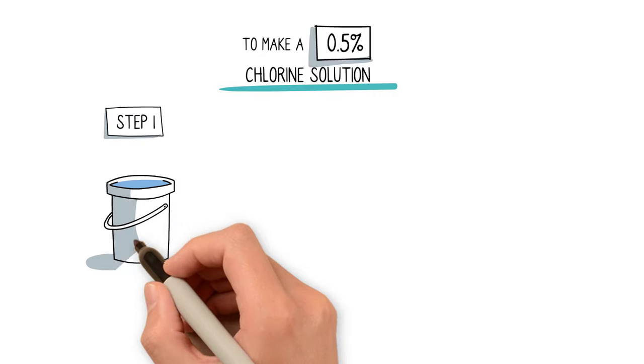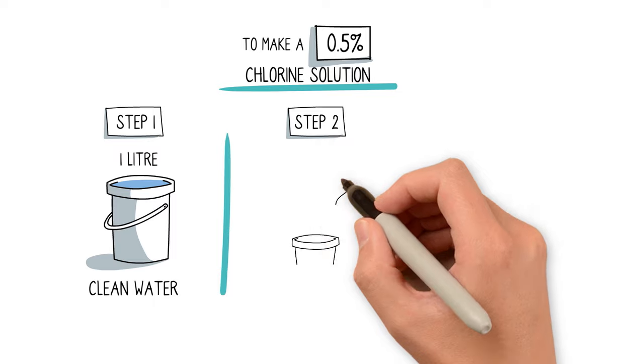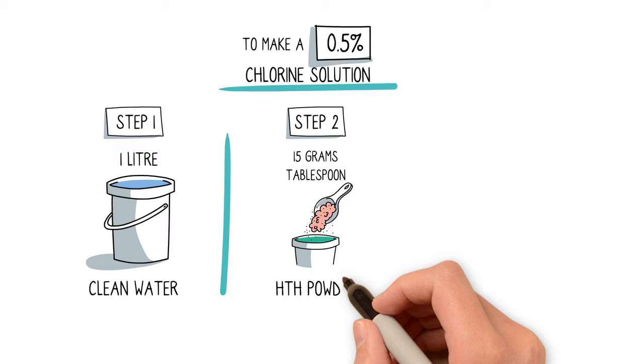Step 1. Pour 1 liter of water in a plastic bucket. Step 2. Add 1 tablespoon of HTH, the equivalent of 15 grams, into the bucket.